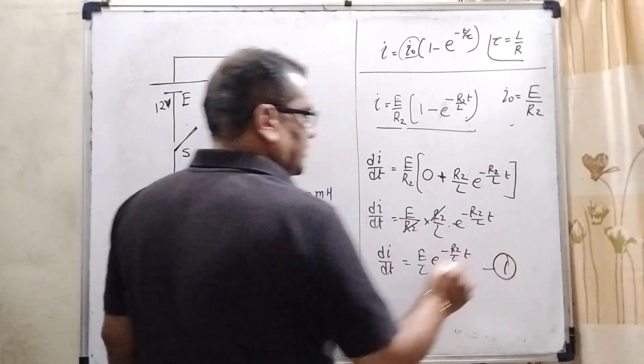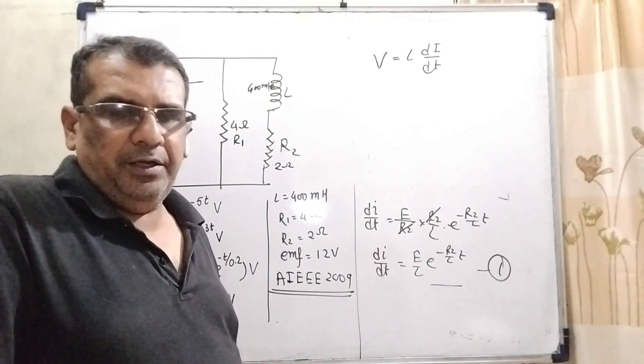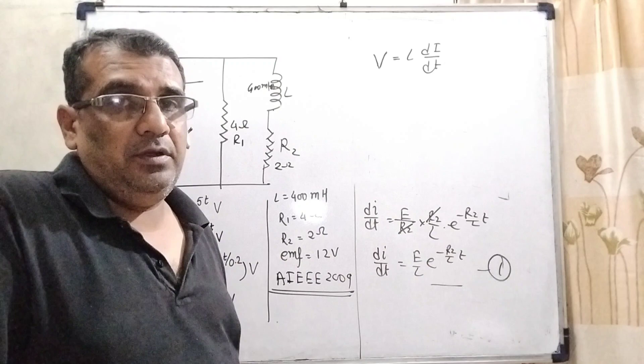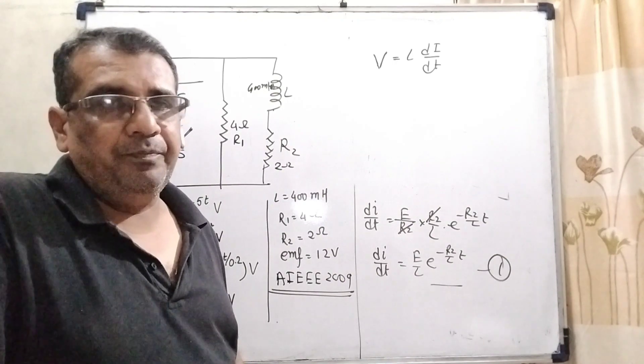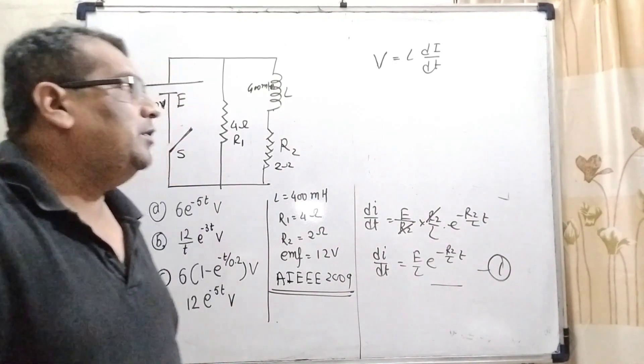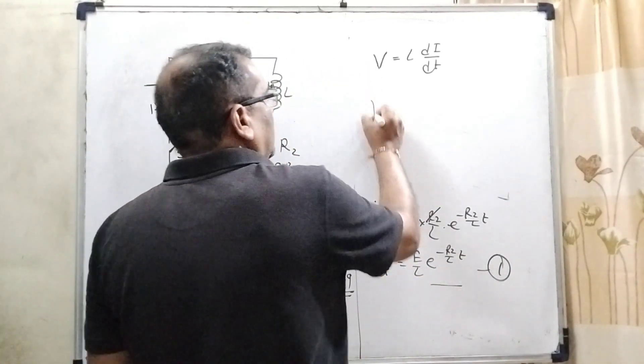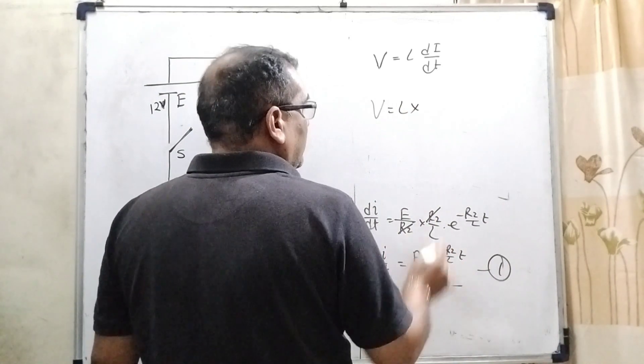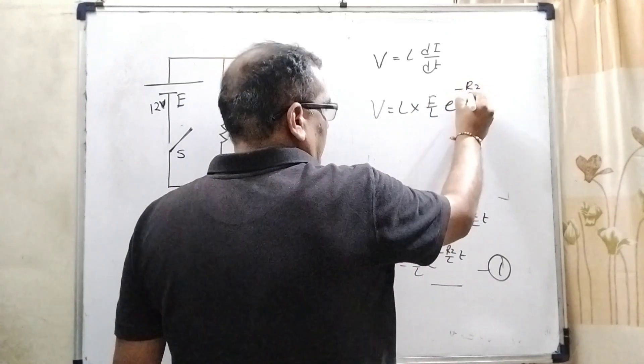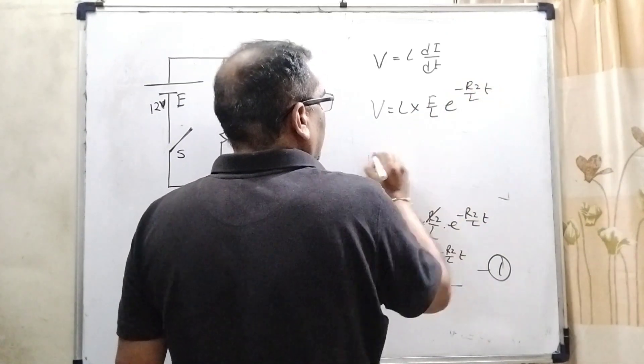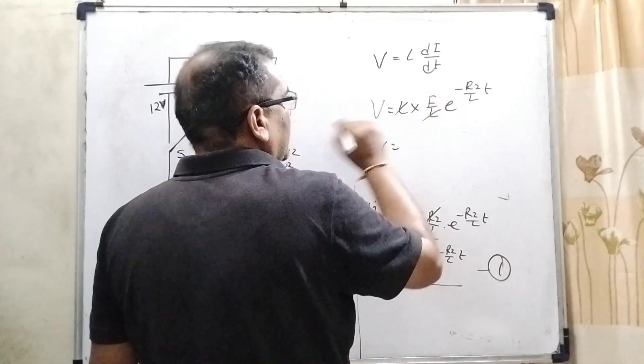Now here we are using V equal to L into dI by dT. When we have induced EMF, we use minus, induced EMF equal to minus L into dI by dT. But here we have written potential, so V equal to L into dI by dT. Now substitute this value from equation first, then L into, what is the value of dI by dT? E by L, E raised to power minus R2 by L into T. L, L cancel, E can be written as V.